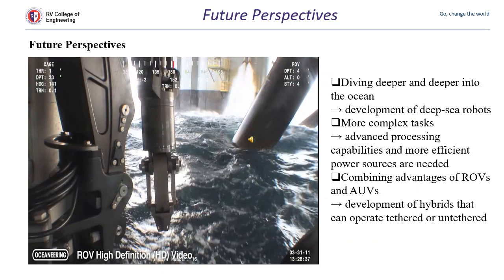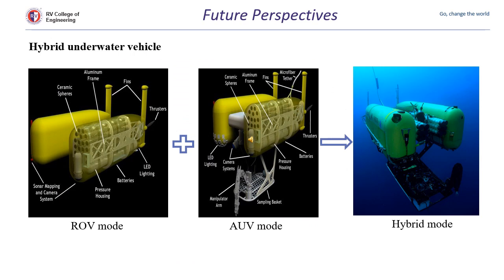Talking about future perspectives — diving deeper into the ocean we come across several new discoveries, so development of deep sea robots must be done. Advanced processing capabilities and more efficient power sources are needed for more complex tasks. We can also combine the advantages of ROV and AUV to obtain a hybrid vehicle, which will be more efficient than each individual one. As shown in the slide, ROV mode plus AUV mode combined together gives a hybrid mode.